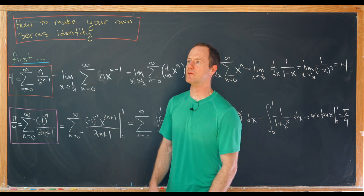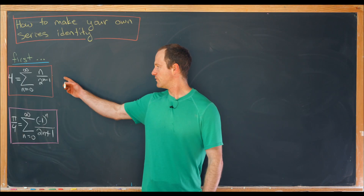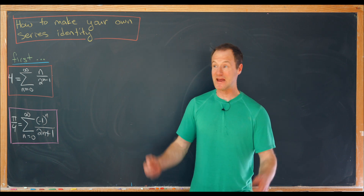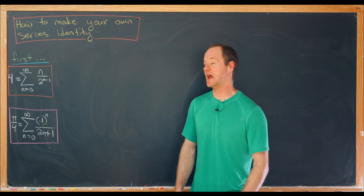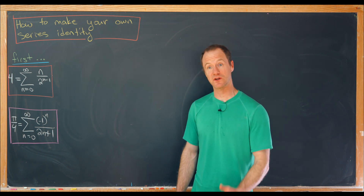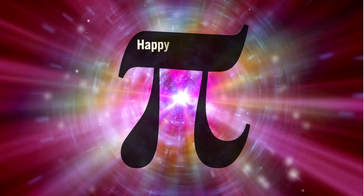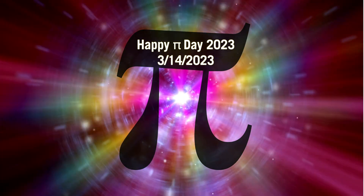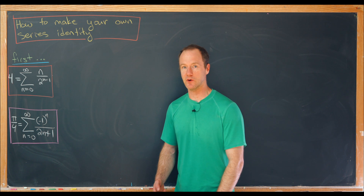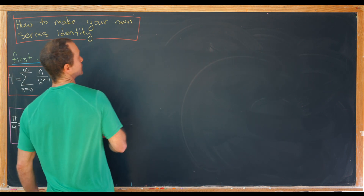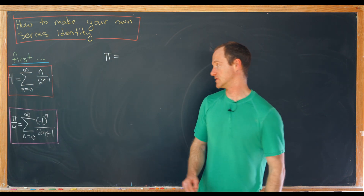Now let's move on to the main idea: making our own series identity. Now that we've built these two basic identities, we're ready to build our fancy identity. As you might guess based on the structure of those, we'll take their product — because pi over 4 times 4 equals pi, which is a really nice number to have as the value of our series. So pi equals the product of those two sums.